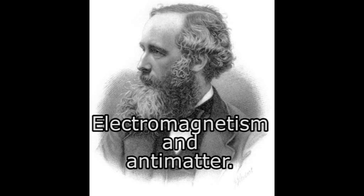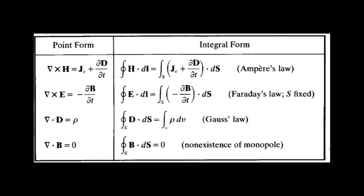James Clark Maxwell used the already existing laws from Ampere, Faraday and Gauss to describe electricity and magnetism as electromagnetism, one of the four forces in the physical universe.